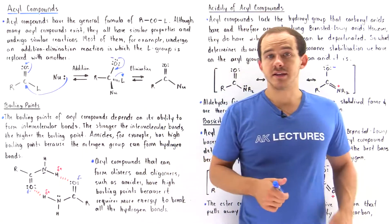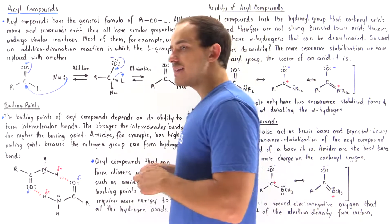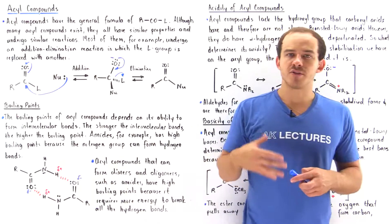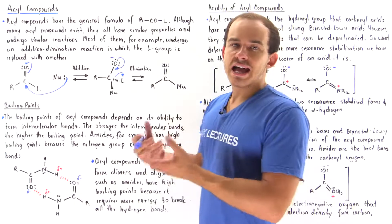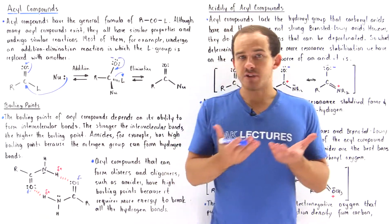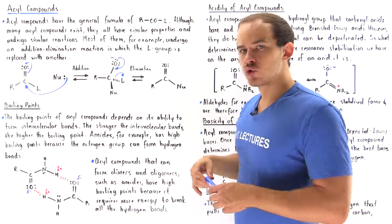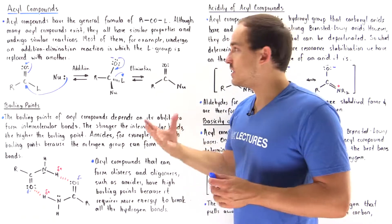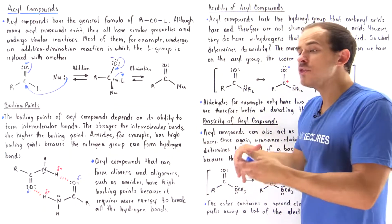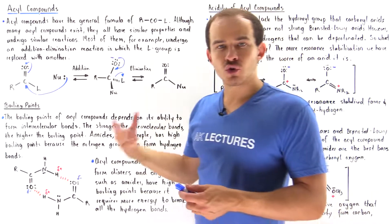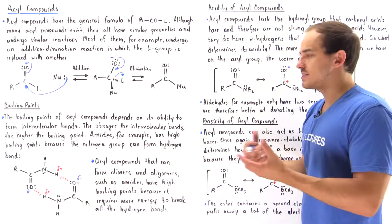Acyl compounds are basically derivatives of carboxylic acid. If we take a carboxylic acid and replace the hydroxyl group with some other type of group, we form the acyl compound. The general formula of the acyl compound has the R hydrocarbon group, the C=O carbonyl group, and the L group. The L group is any type of group other than the hydroxyl group, because replacing it with the hydroxyl group forms the carboxylic acid.